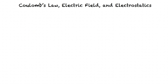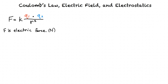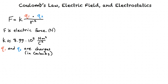The scalar form of Coulomb's Law is F equals K times Q1 times Q2 over R squared. Where F is the electric force in newtons, K is Coulomb's constant, approximately equal to 8.99 times 10 to the 9th newton meters squared per Coulomb squared. Q1 and Q2 are the magnitudes in Coulombs of the two charges, and R is the distance in meters between the two particles.